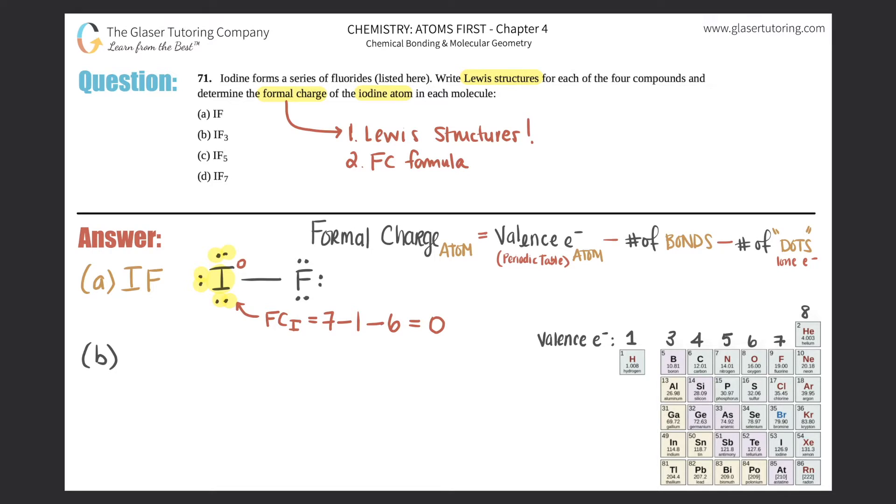Part (b), we have IF₃. So pause the video if you want to try to form your own Lewis structure and see if it matches mine. But in this case, we now have iodine in the middle surrounded by three fluorines.